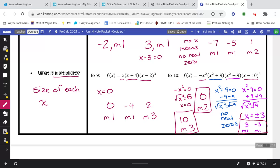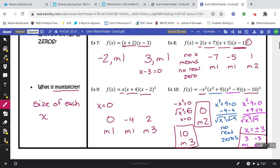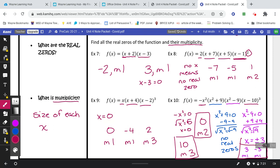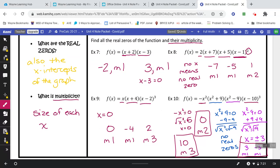We're actually going to eventually graph these. So I want to give you a little bit more information about what a real zero is. A real zero is also the x-intercepts of the graph. That's going to come into handy tomorrow. In the meantime, let's go ahead and move on to the back side.